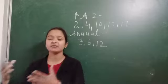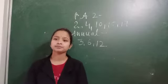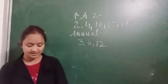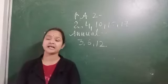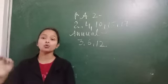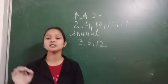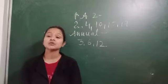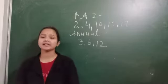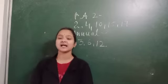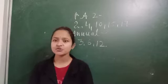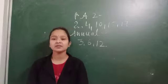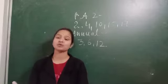Animals those who are eating flesh of other animals are called the carnivorous animals. And both plants and flesh eating animals are called the omnivorous. Omni means both. So animals those who are eating plants as well as the flesh of other animals are called the omnivorous.